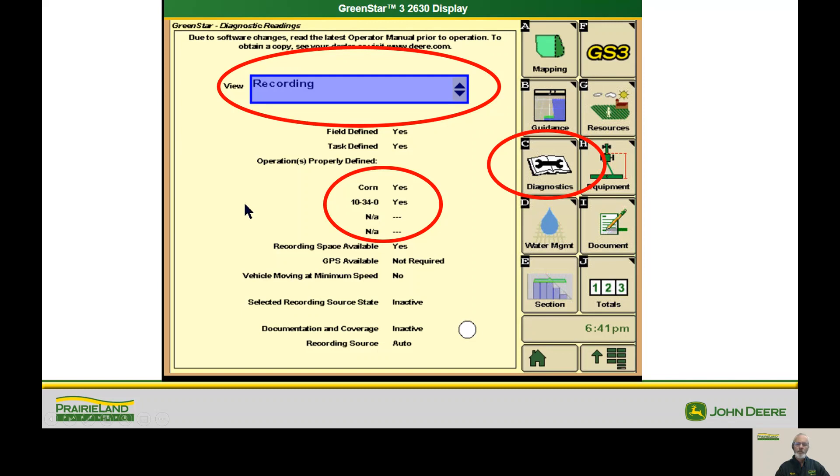This is the page I will take you to if you call the RSC. If we go to diagnostics and it's up here in the view, it'll probably say GPS, but I want you to select recording. We're going to then go to the operations properly defined right down here. If it says corn and yes and 1034-0 and yes, everything is done correctly and it should document. If it says no, you need to go back to your screens and check to see what was left out.